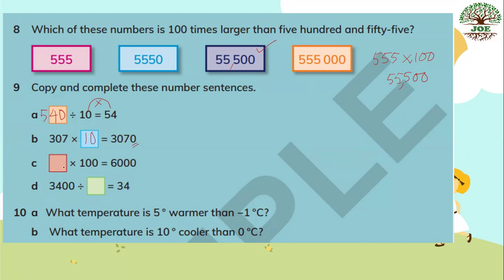Part C: something multiplied by 100 equals 6,000. If we move two zeros, our starting number is 60, because 60 multiplied by 100 is 6,000. Part D: 3,400 divided by something equals 34. 3,400 becomes 34 — that is two places smaller, so we divide by 100.